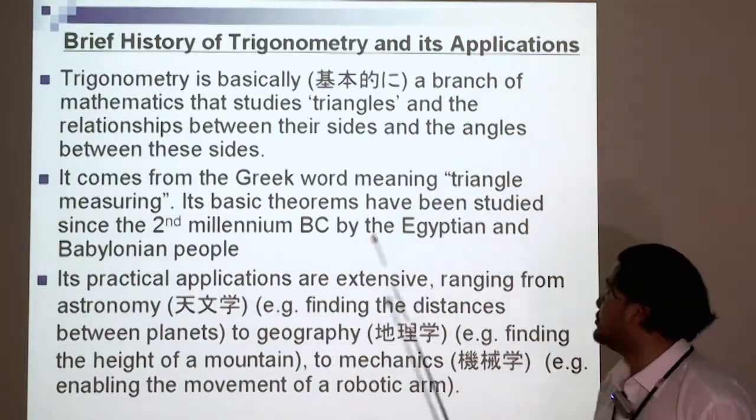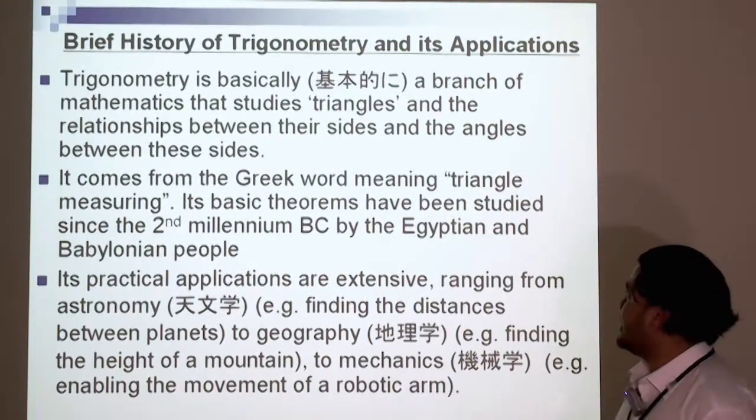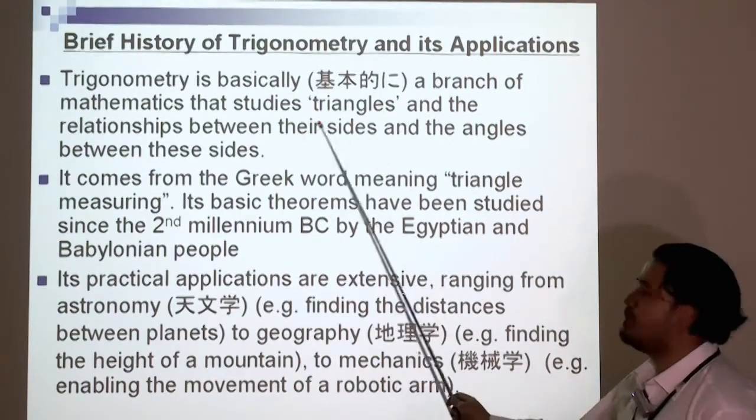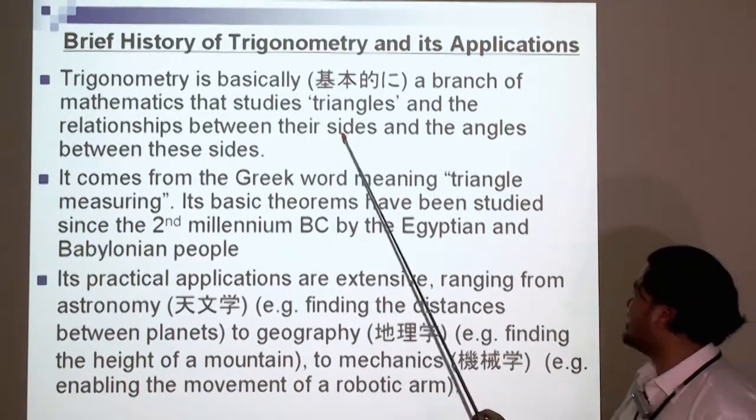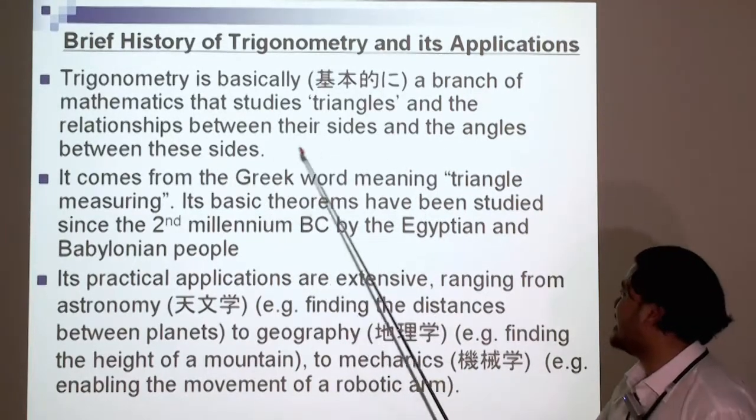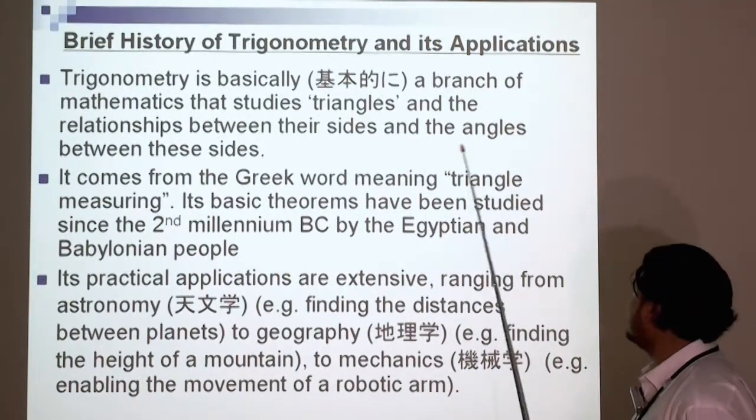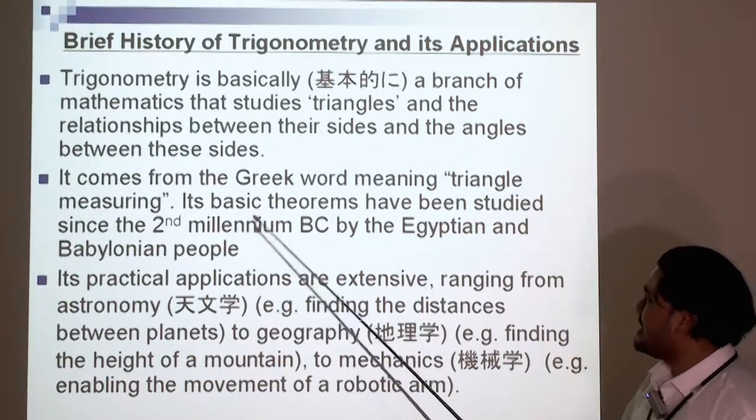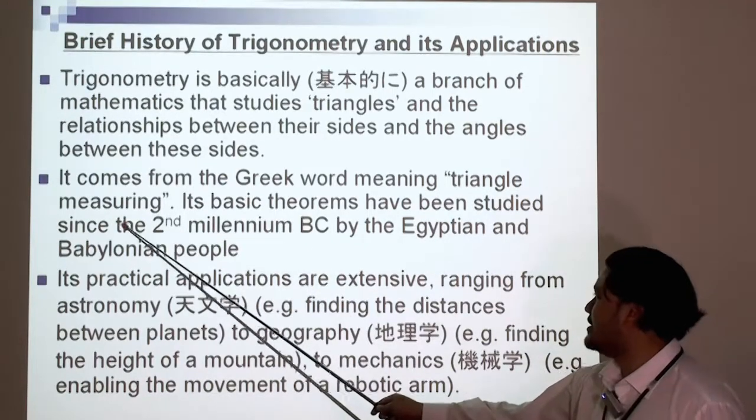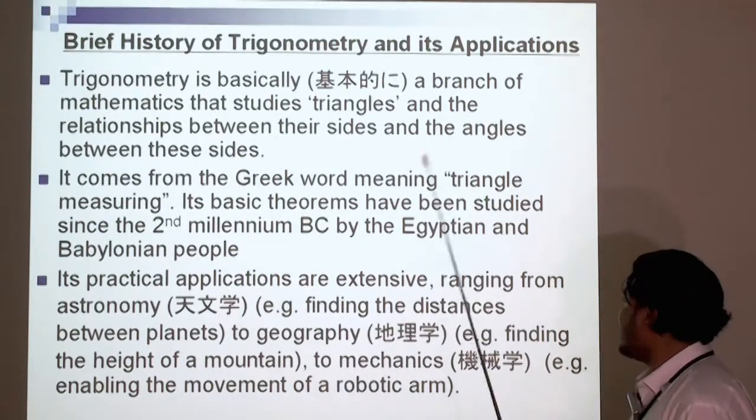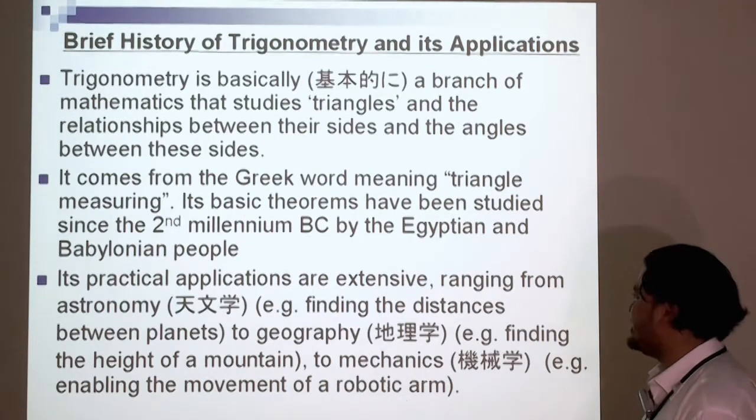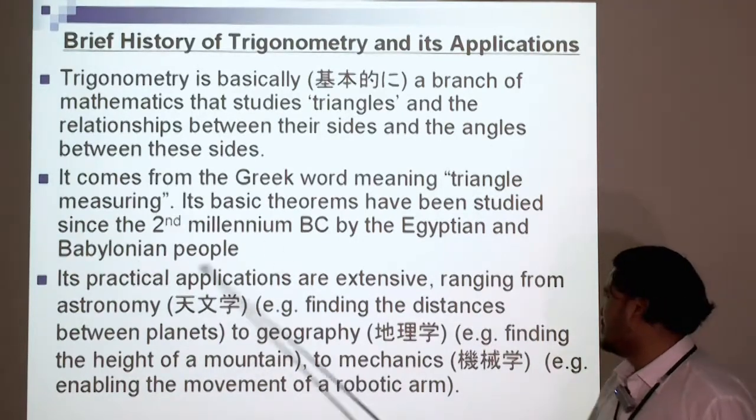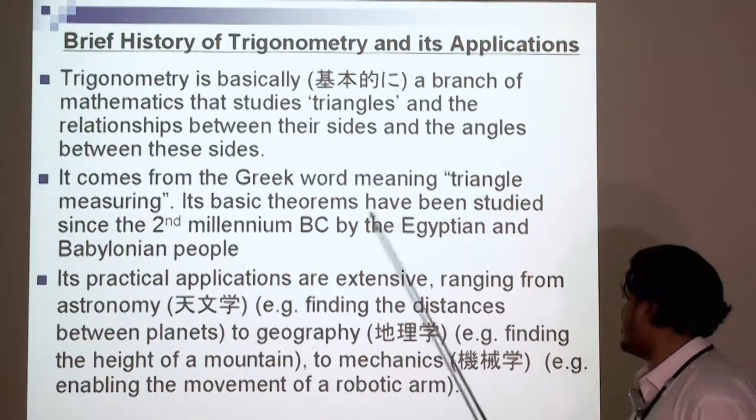A brief history of trigonometry and its applications. Trigonometry is basically a branch of mathematics that studies triangles. It's all about triangles and the relationships between their sides and the angles between these sides. It comes from the Greek word meaning triangle measuring. Its basic theorems have been studied since the second millennium BC by both the Egyptians and Babylonian people. These were brilliant mathematicians long time ago.